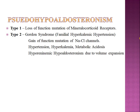Pseudo-hypoaldosteronism means serum aldosterone levels are normal but the body behaves as if aldosterone is low. Type 1 is caused by a loss-of-function mutation of the mineralocorticoid receptors. Type 2 is called Gordon syndrome, caused by a gain-of-function mutation of the sodium chloride cotransporters in the distal nephron — the same channels acted upon by thiazide diuretics. In Gitelman syndrome, blocking these sodium chloride channels leads to various manifestations; reversing that gives a gain-of-function mutation, which is Gordon syndrome.